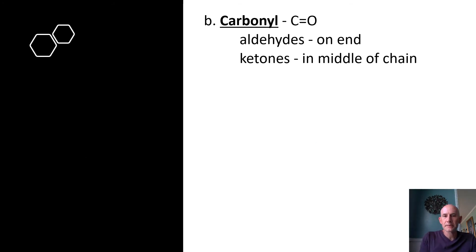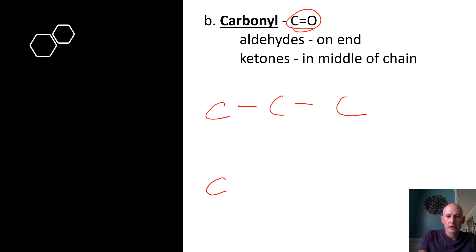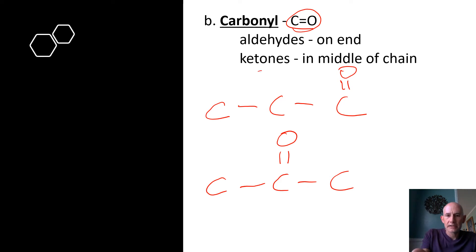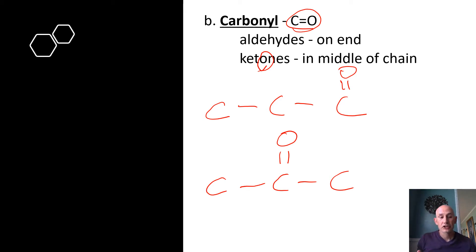The next functional group is the carbonyl — a carbon double bonded to an oxygen. There are two basic types: when the carbonyl is on the end, that's called an aldehyde; when it's in the middle, that's a ketone. A memory trick: the O in ketone is in the middle of the word. Aldehydes affect how sugars form ring structures, giving them their shape, which determines their chemical structure — we'll look at that when we cover macromolecules.